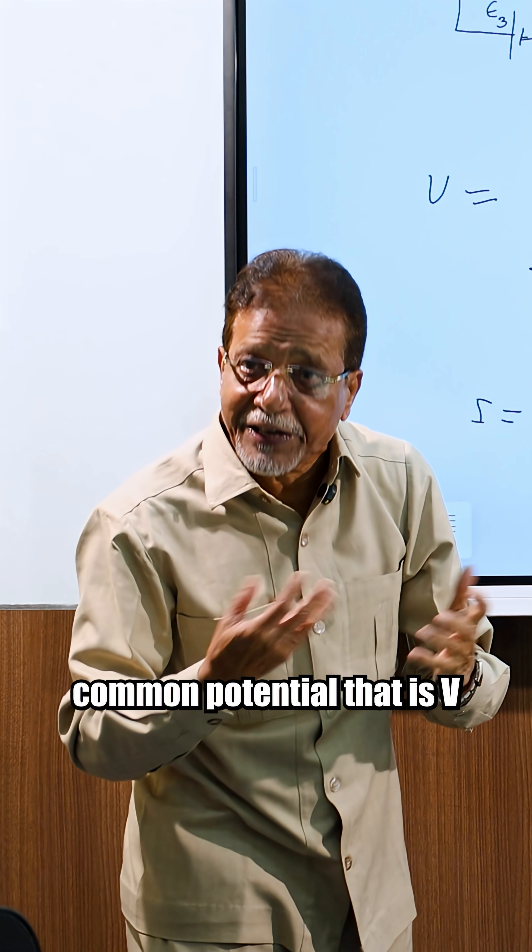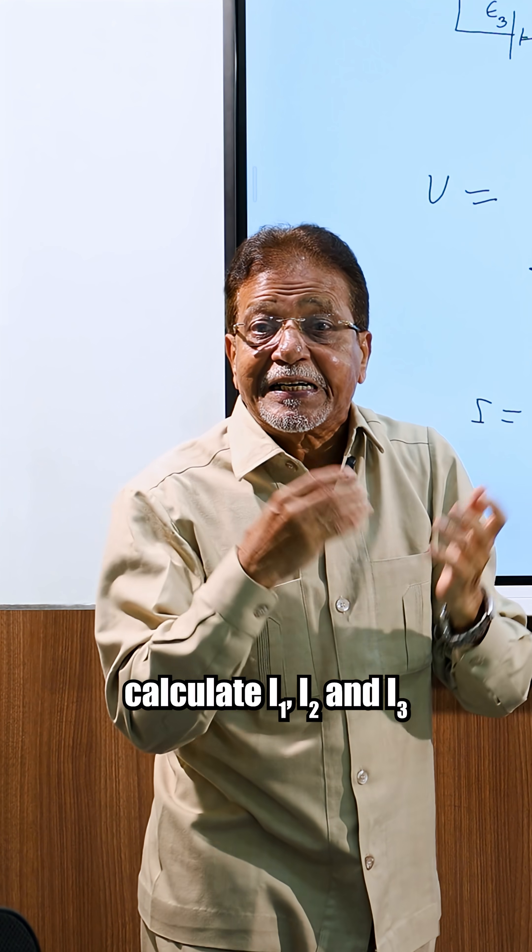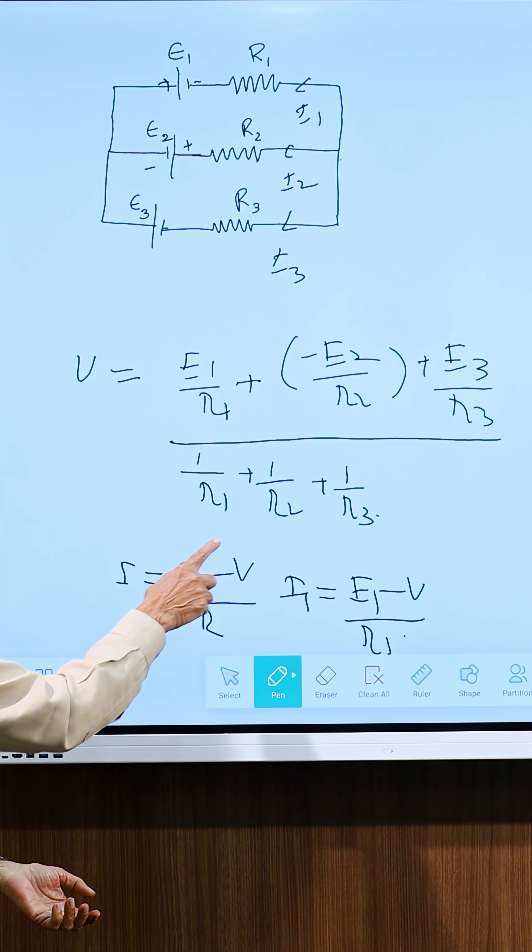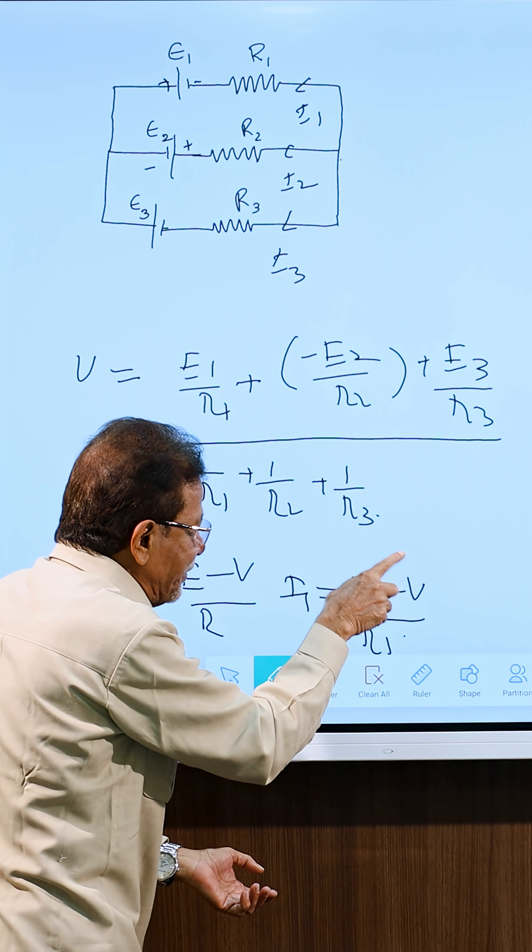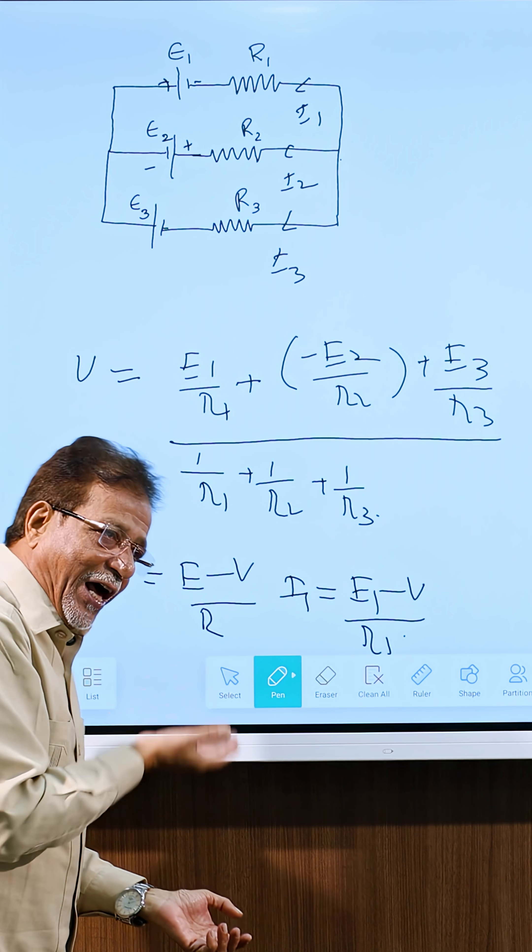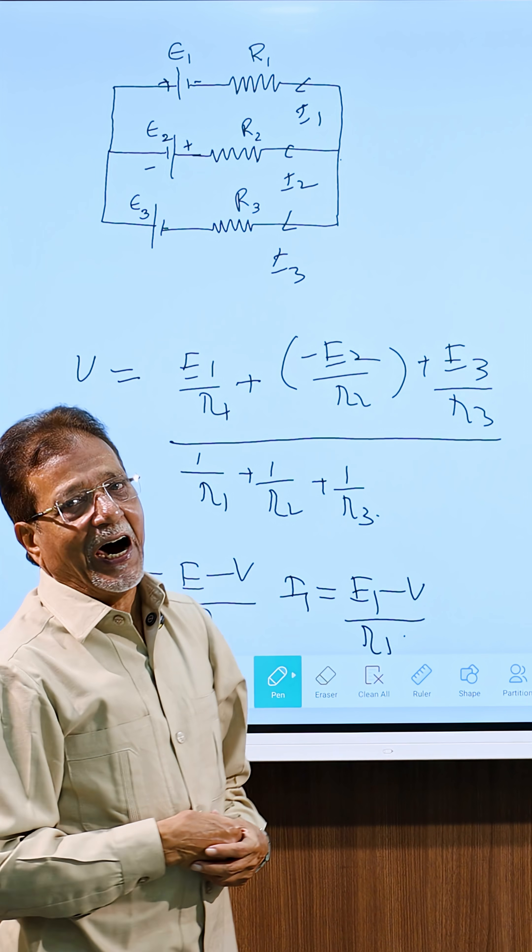Suppose you want to calculate i1, i2 and i3. Then i will be equal to E minus V upon R. That is i1 will be equal to E1 minus V upon R1. Similarly, i2 will be equal to E2 minus V upon R2. And in the same way, i3.